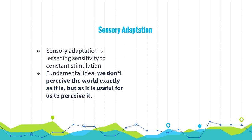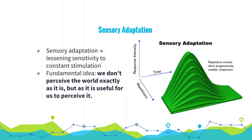Sensory adaptation is the idea of lessening sensitivity to constant stimulation. An example is when we move a watch on our wrist — we'll feel the difference for only a few moments. This is due to the fact that our nerve cells fire less frequently after constant exposure to a stimulus. The fundamental idea is that we don't perceive the world exactly as it is, but as it is useful for us to perceive it. Television producers must use techniques such as sudden noises, edits, zooms, cuts, and pans to keep our attention. Looking at a 3D graph of sensory adaptation, response intensity increases at the beginning but decreases as time passes and repetitions increase.